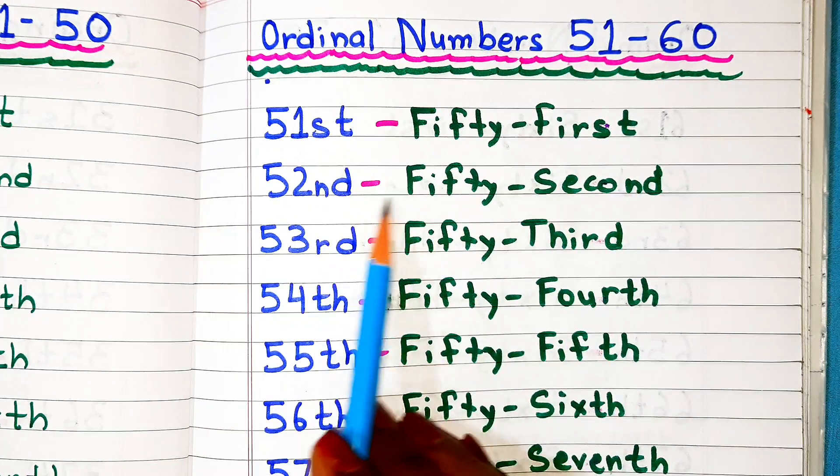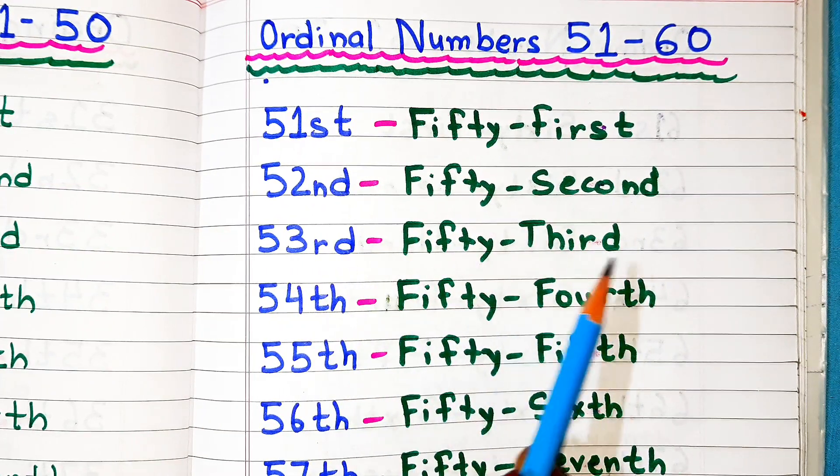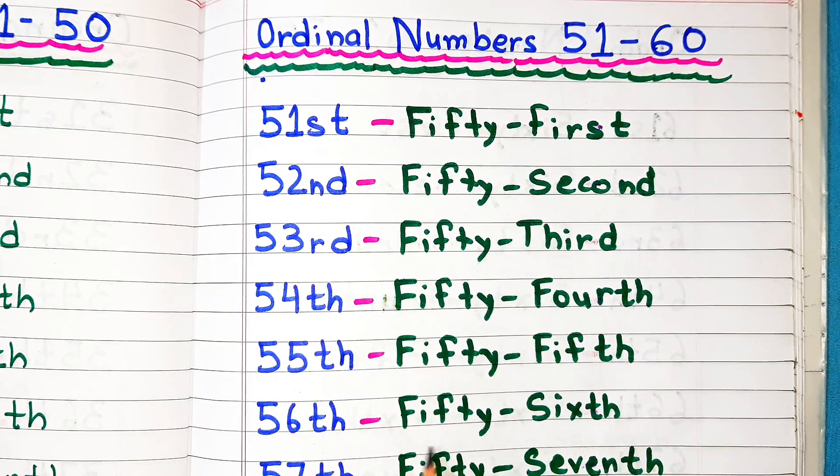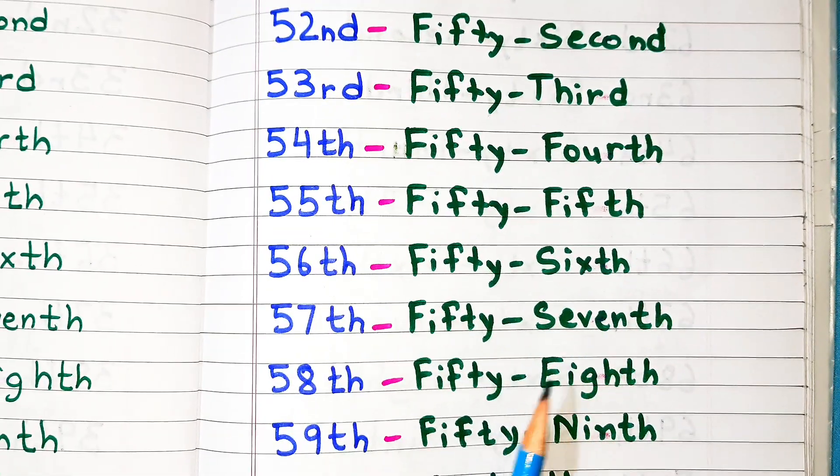Ordinal numbers 51 to 60: 51st, 52nd, 53rd, 54th, 55th, 56th, 57th.